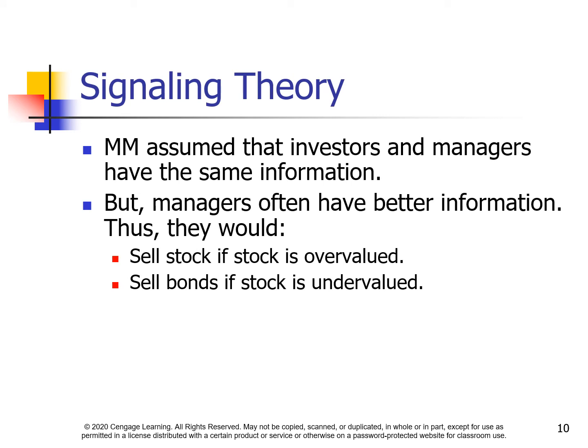Signaling theory. MM assumed that investors and managers have the same information. But managers often have better information. Thus, they would sell stock if stock is overvalued, and sell bonds if the stock is undervalued.